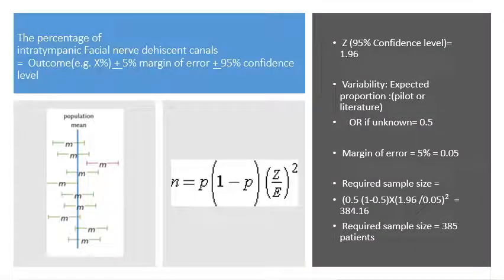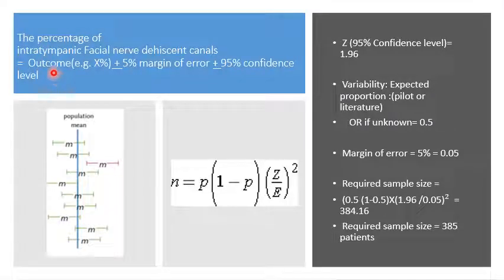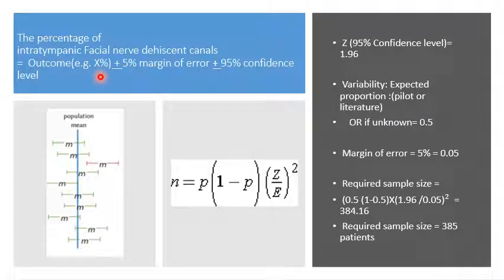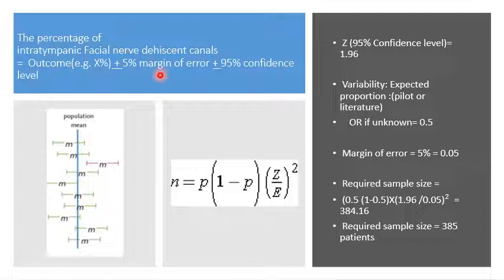Starting with the first thing — the precision of our estimate: how accurate is our estimate of the percentage of intratympanic facial nerve canals that were actually found dehiscent during our study. At the end of the study we would produce a report with three figures: the actual outcome — the percentage of facial nerve canals found to be dehiscent, say 20% or 25% — plus or minus the margin of error of our estimation.